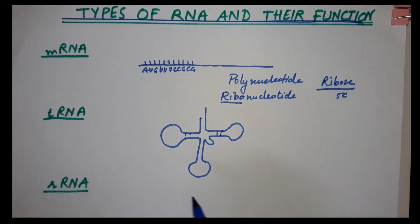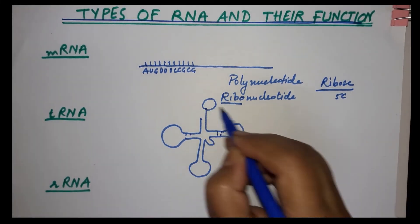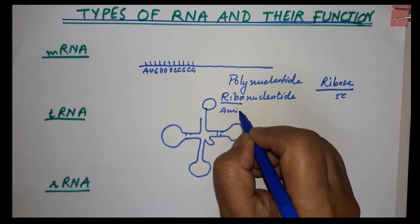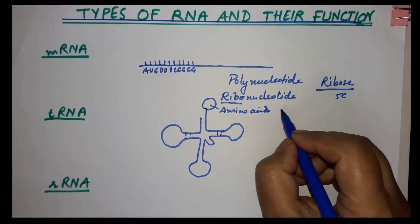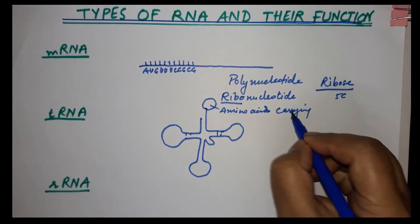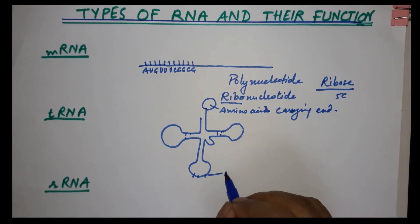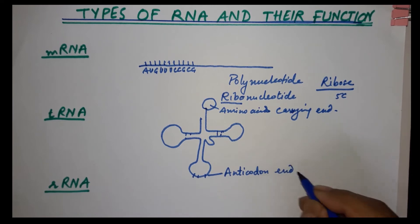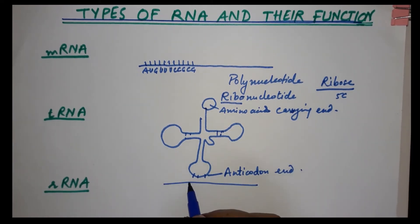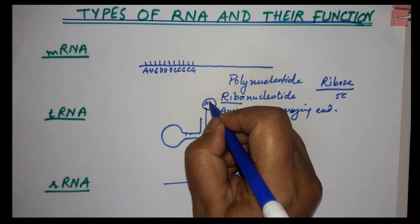This coiled structure forms tRNA. At one end of tRNA, an amino acid is attached. This is the amino acid carrying end. The other end is called the anticodon end, because messenger RNA has codes on it.